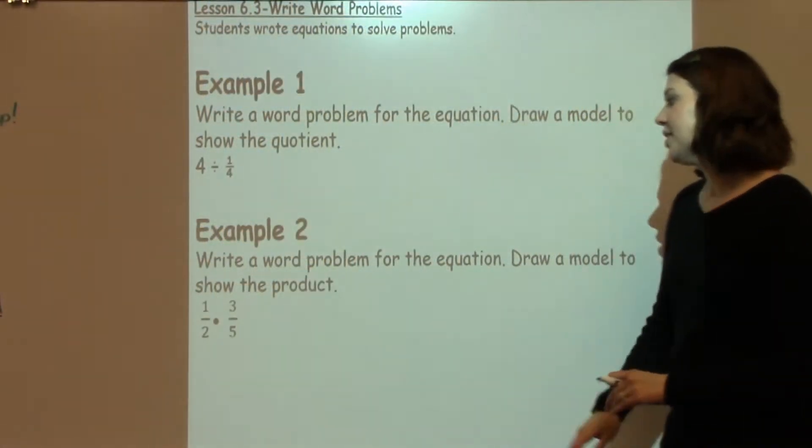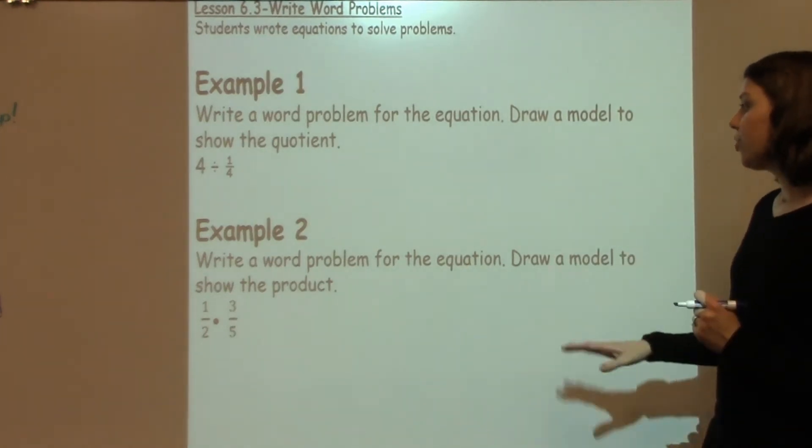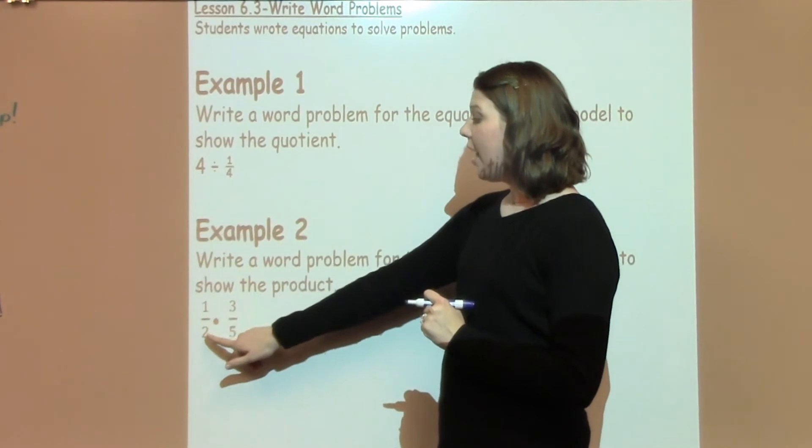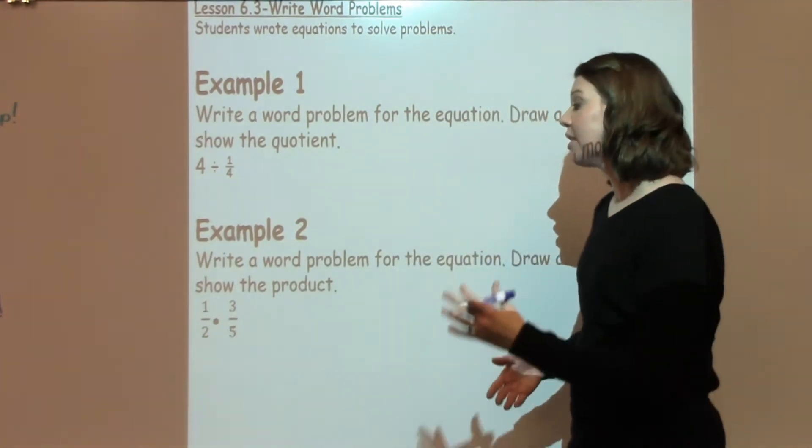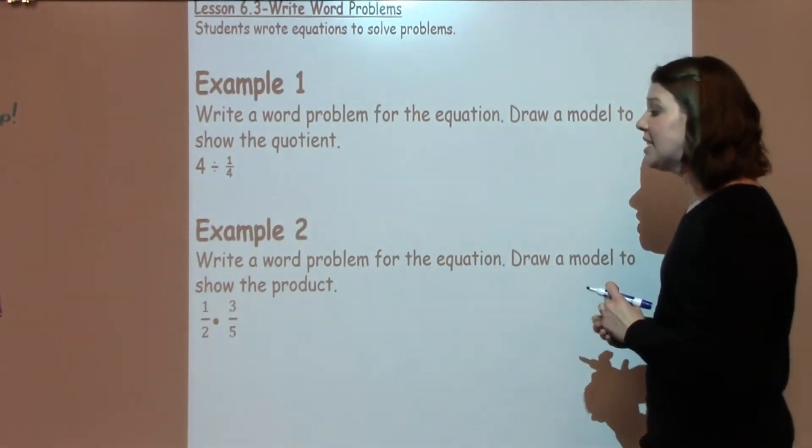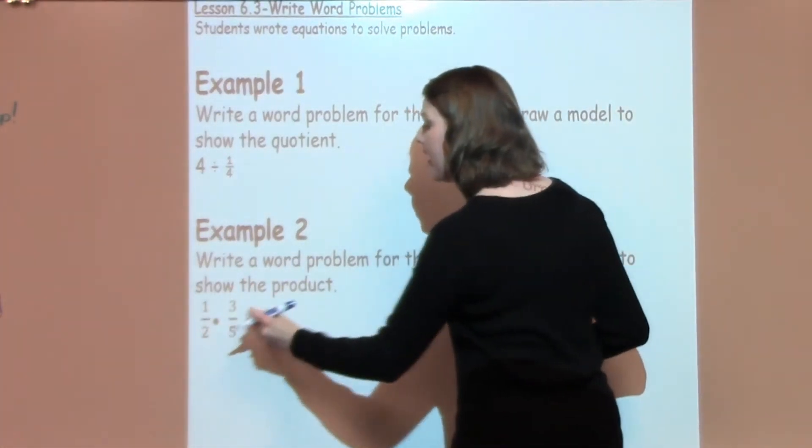For example number two, it says write a word problem for the equation and draw a model to show the product. When I look at this, I've got 1 half times 3 fifths. This is like a simple multiplication of fractions problem, which just means I need to multiply the top times the tops, the bottoms times the bottom.